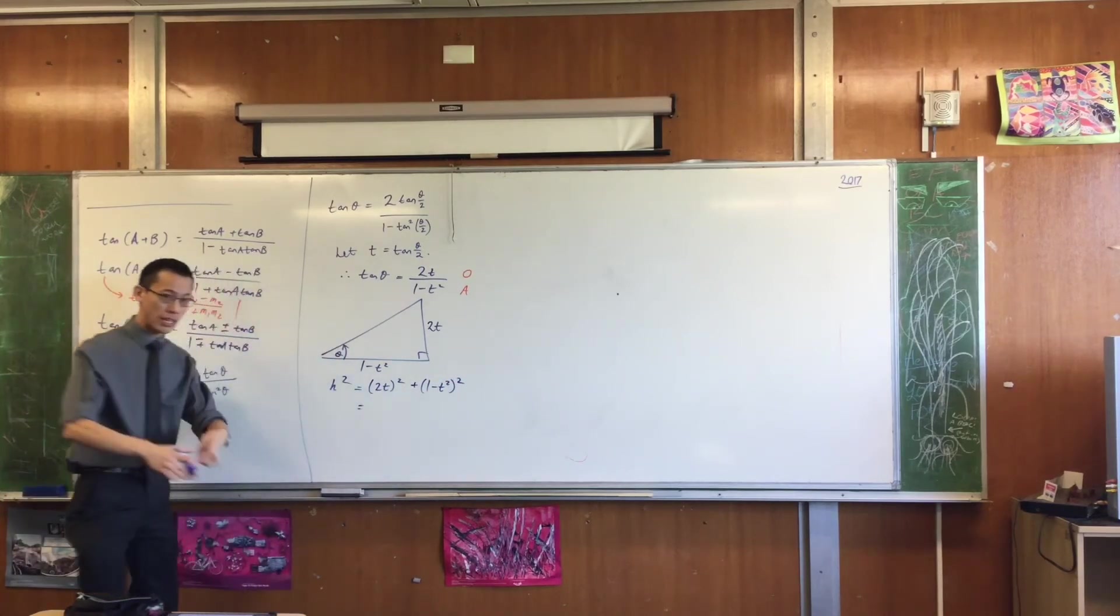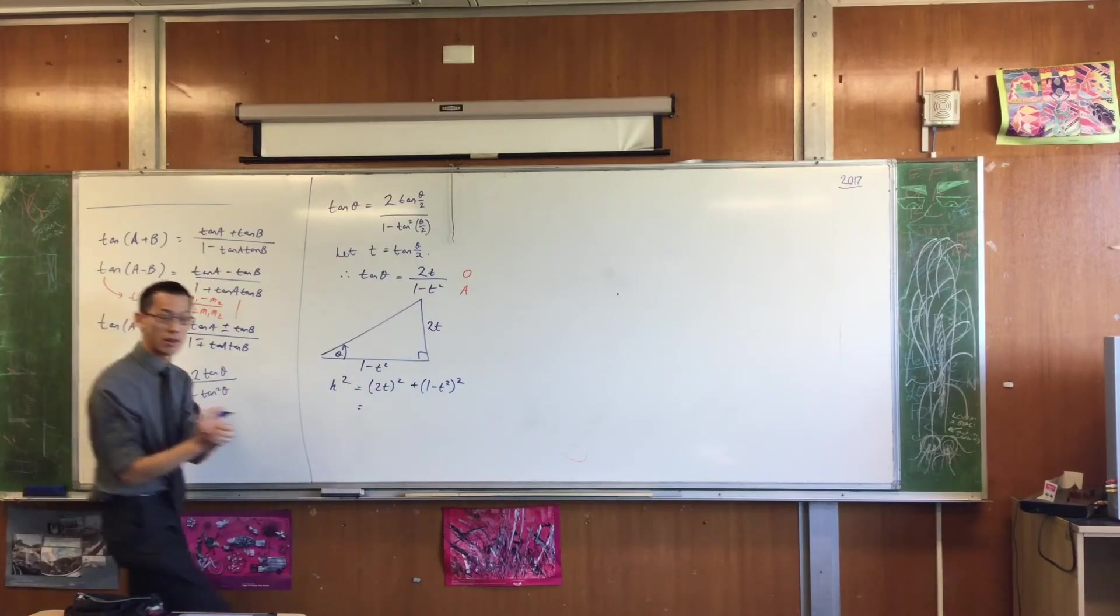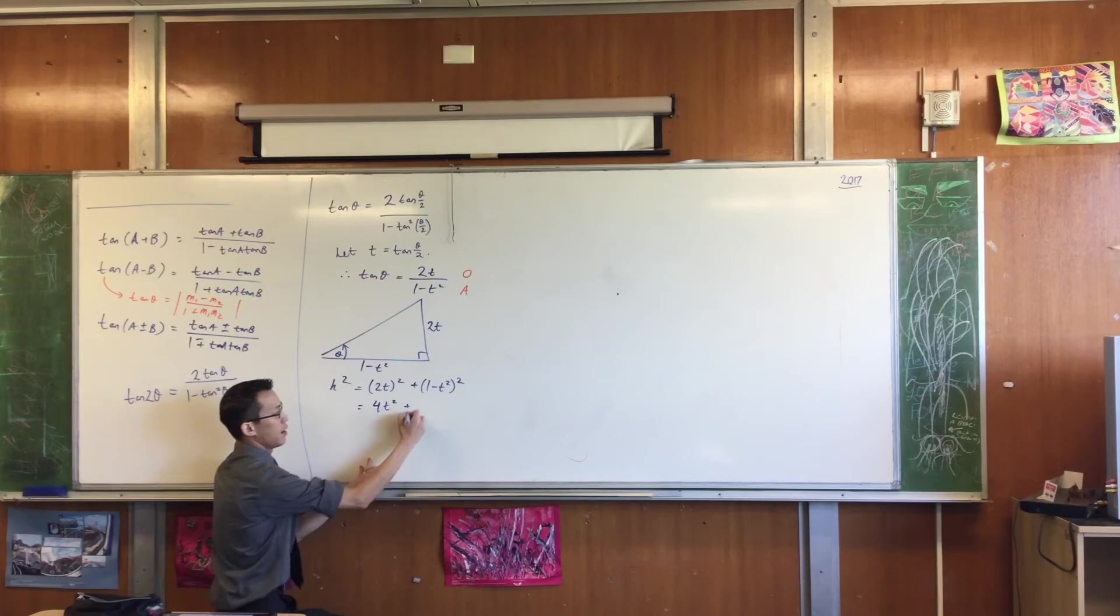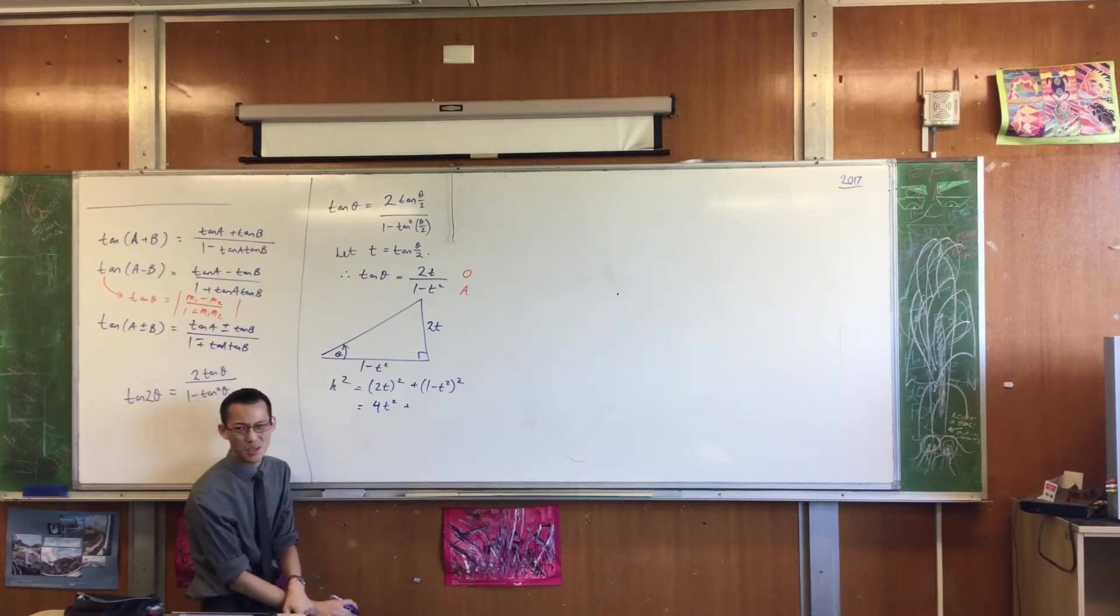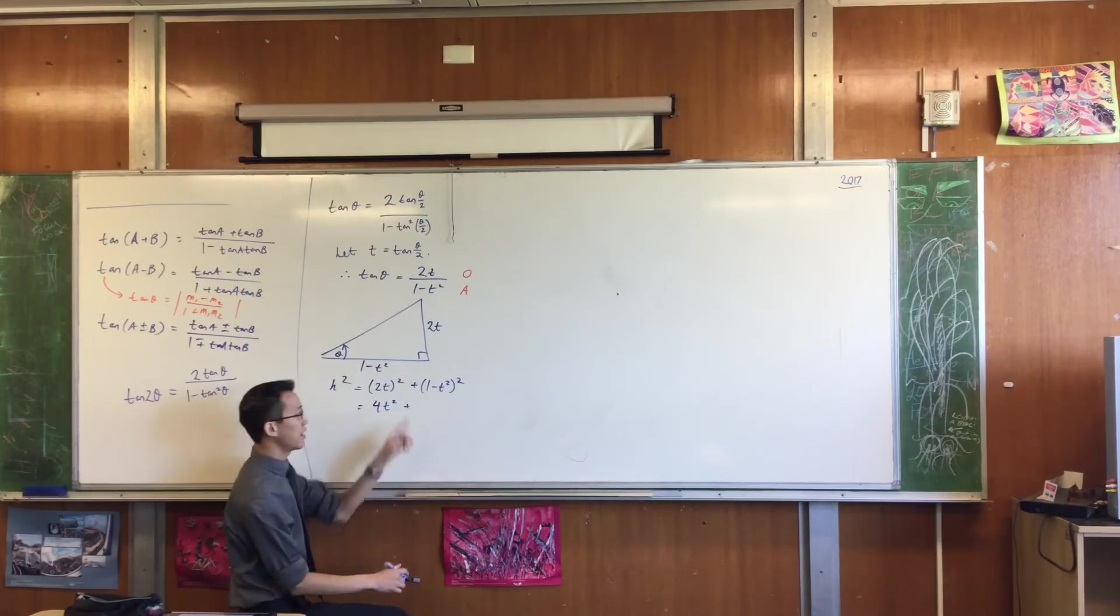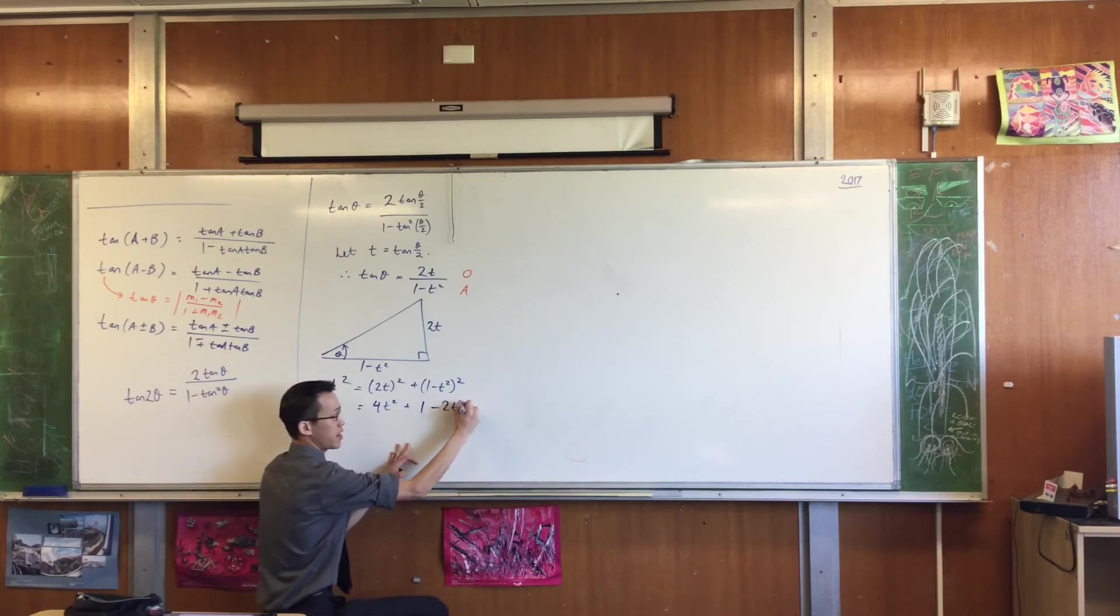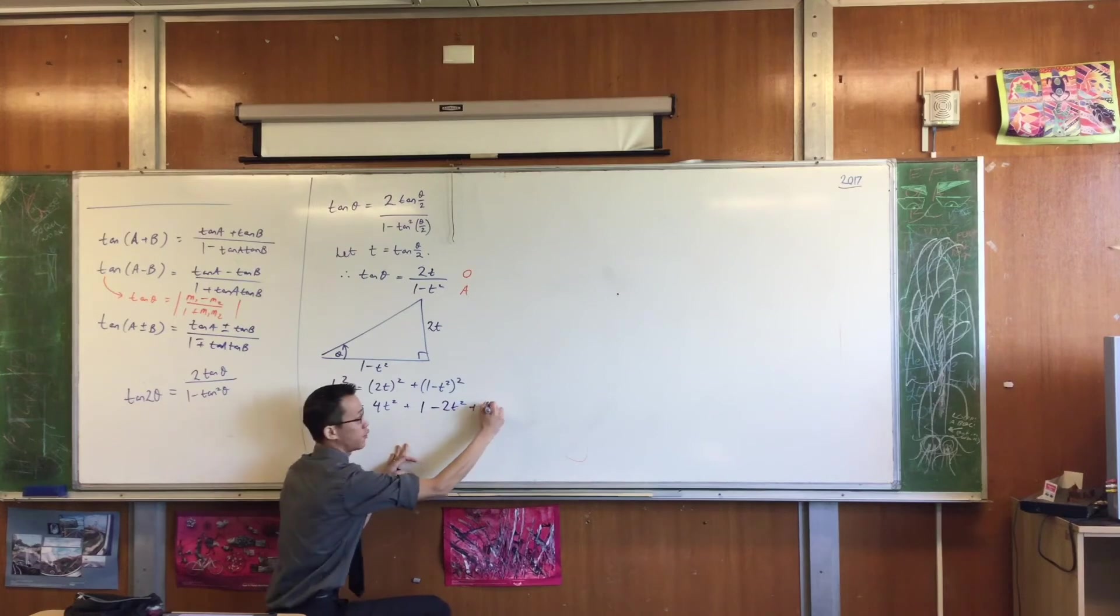2T all squared becomes 4T². Don't forget, you're squaring both terms. Over here, we're going to get some big powers, but that's okay, we can deal with that. This is going to be 1 - 2T² + T⁴.